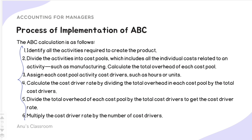The implementation of ABC happens in six steps. First, identify all activities required to create the product — sourcing raw materials, machines, skilled labor, internal transportation, electricity, water. Second, divide these activities into cost pools containing all individual costs related to an activity. Third, calculate the total overhead of each cost pool. Fourth, assign each cost pool activity to cost drivers such as hours or units. Fifth, calculate the cost driver rate by dividing total overhead in each cost pool by the total cost driver. Sixth, multiply the cost driver rate by the number of cost drivers.